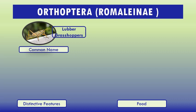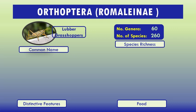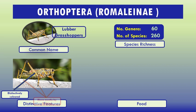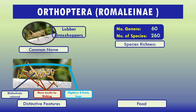Species richness: number of genera 60, number of species 260. Distinctive features: distinctively colored, move mostly by walking, flightless and fairly large. Food: feed on all types of crops.